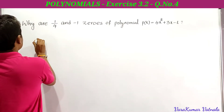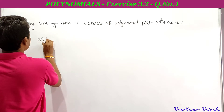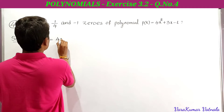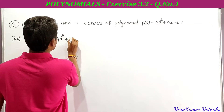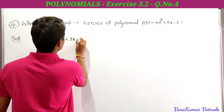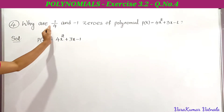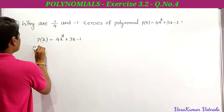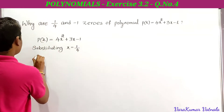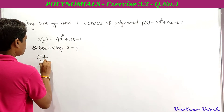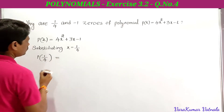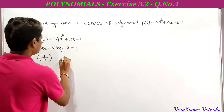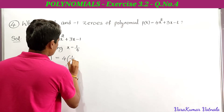p(x) = 4x² + 3x - 1. Now we have to substitute x = 1/4. Substituting x = 1/4 in p(x), we get p(1/4) = 4 into (1/4)² ...